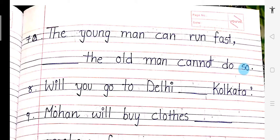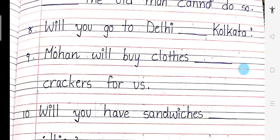Number 7: The young man can run fast, dash the old man cannot do so. A young man can run fast but the old man cannot do so. Number 8: Will you go to Delhi or Kolkata? Number 9: Mohan will buy clothes and crackers for us.